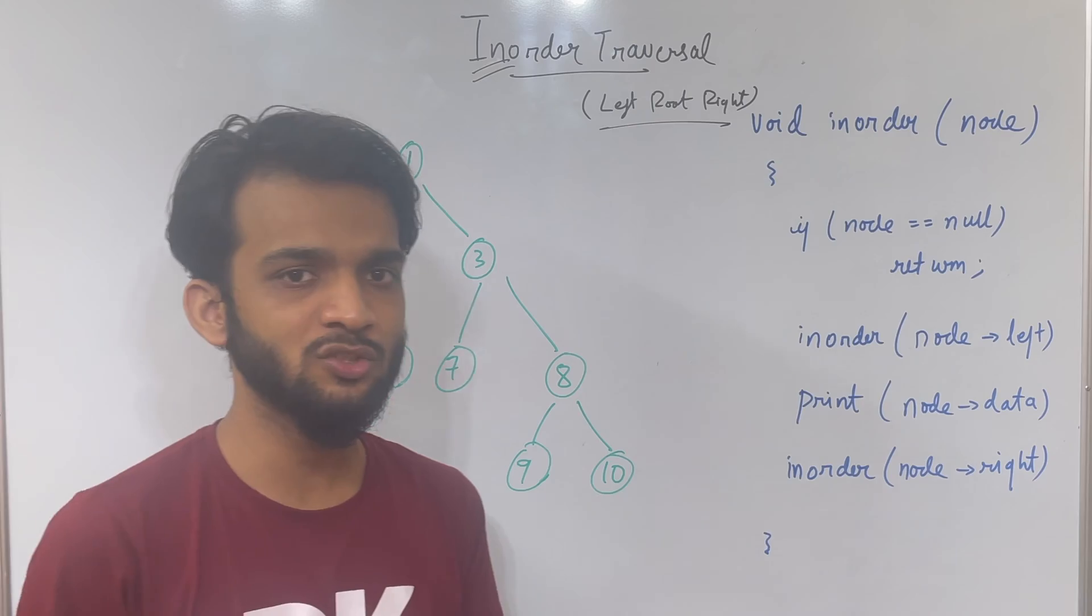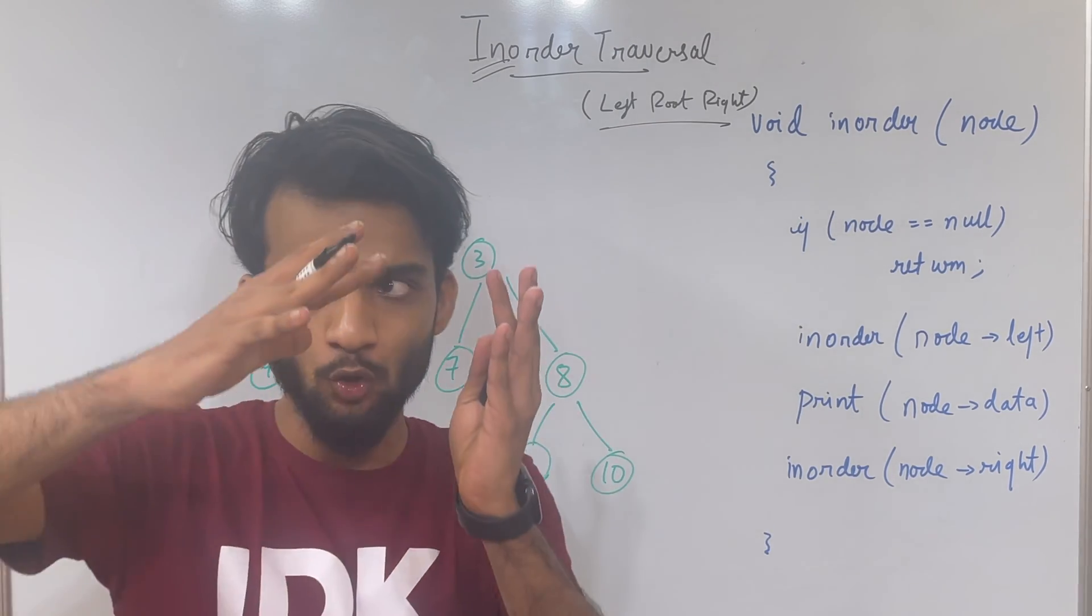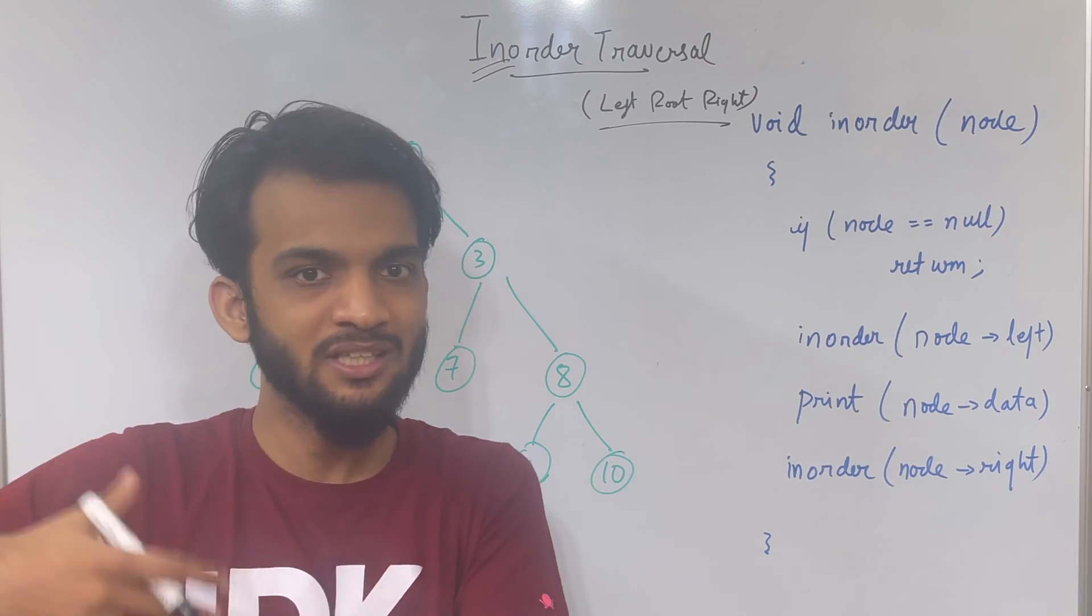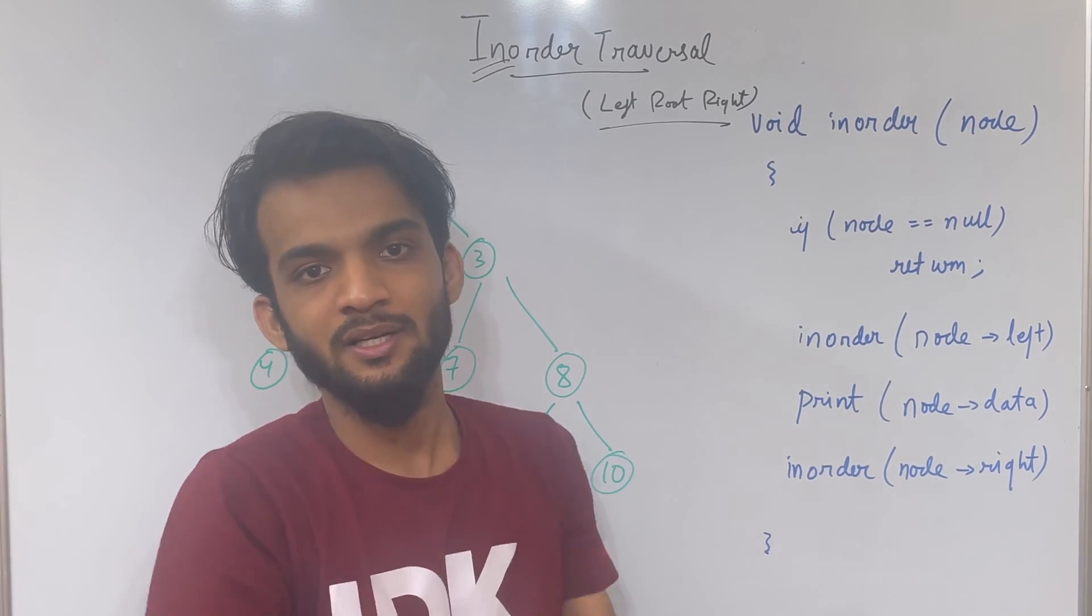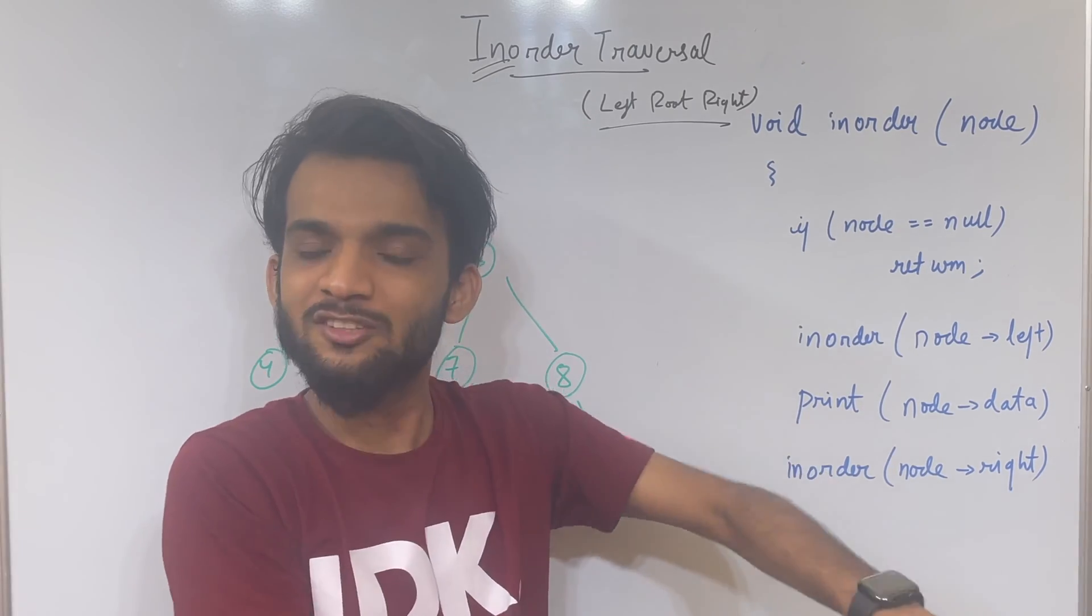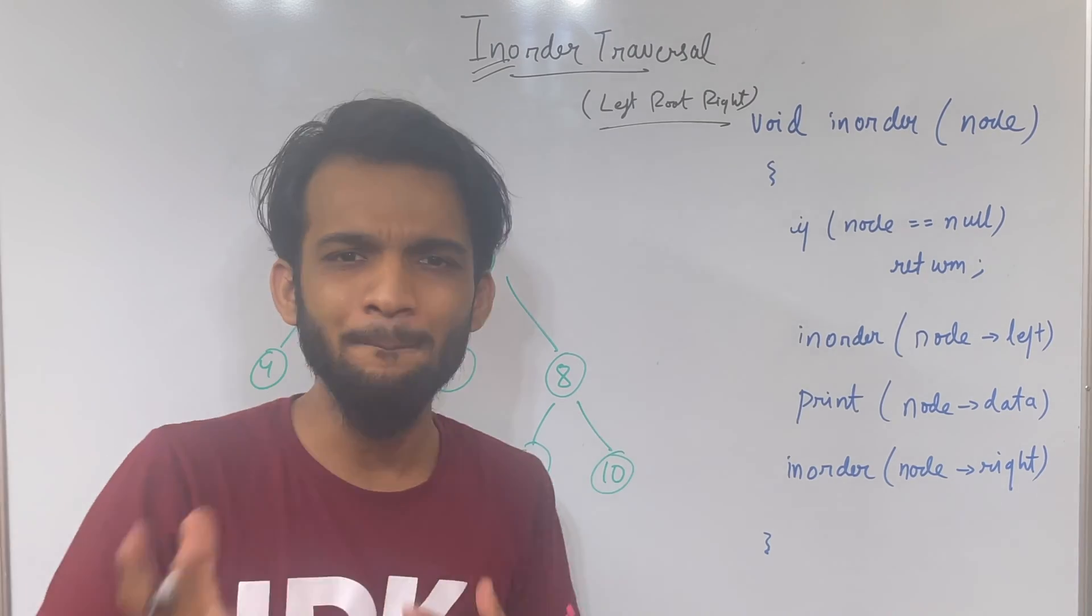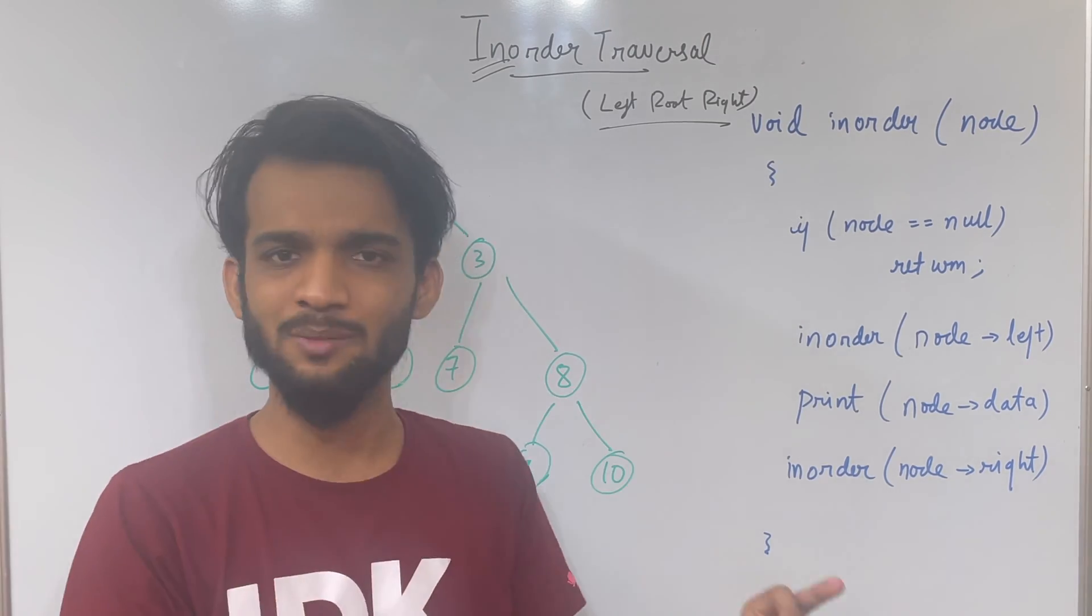Now in binary trees, we generally implicate recursion in order to travel because you have to go to every sub-tree and then do the task and then again come back and then again go to the sub-tree. It's a kind of a recursion that we do. Go, come, go. So that's a recursion. That is why this is the simple. Don't complicate binary trees. Keep it as simple as you can.